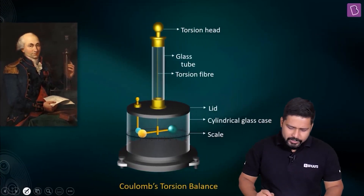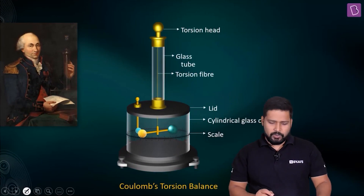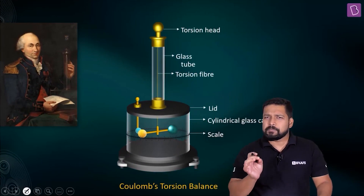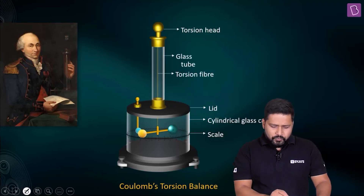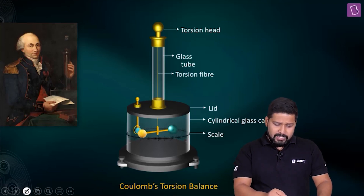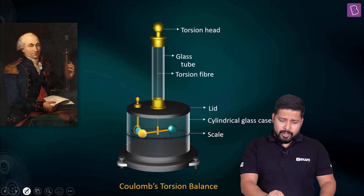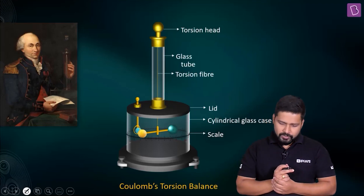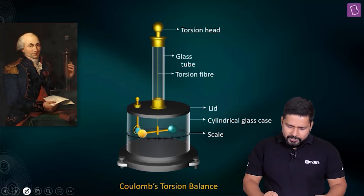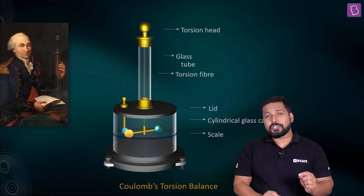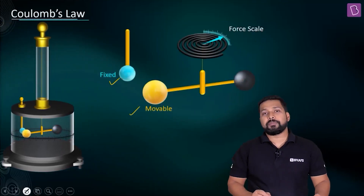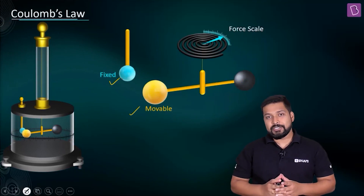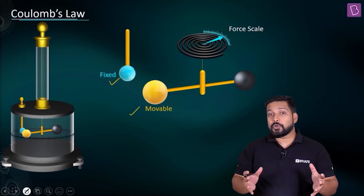This instrument is called Coulomb's torsion balance. It consists of some simple parts: two spheres, a scale lid, a glass tube, a torsion fiber, and a torsion head. If you charge this sphere and this sphere both with similar — like — charges, they are going to repel each other.